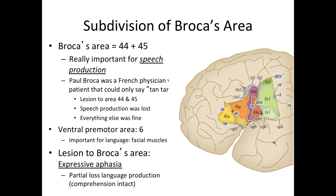Aphasia is the loss of ability to understand or express speech caused by brain damage. Damage to Broca's area results in expressive aphasia, also known as Broca's aphasia — a type of aphasia characterized by partial loss of the ability to produce language, both spoken and written. However, comprehension of language generally remains intact. A person with expressive aphasia will exhibit effortful speech, having to work very hard to produce language.